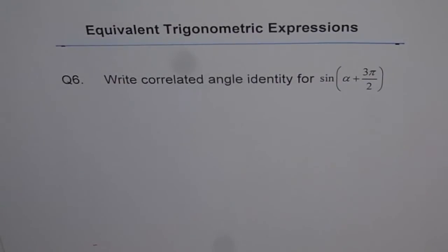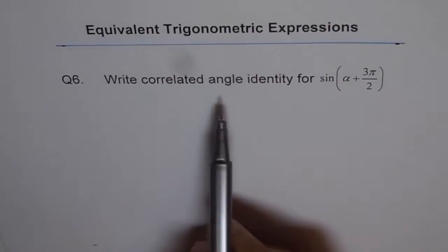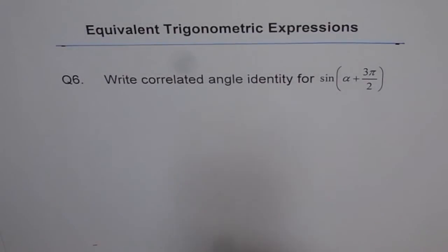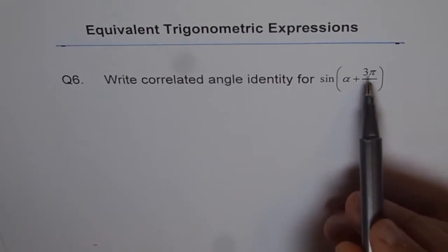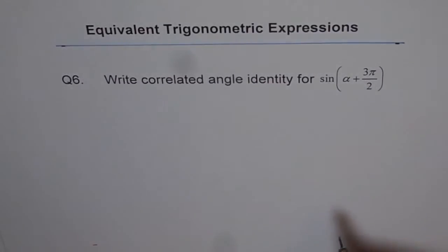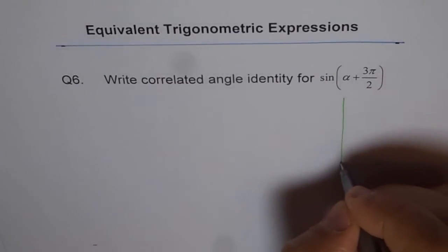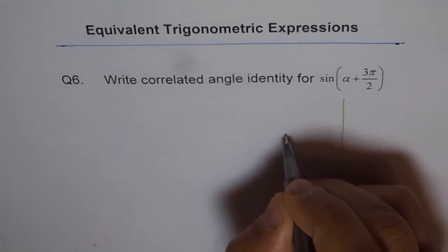Equivalent trigonometric expressions, question 6. Write the correlated angle identity for sine of alpha plus 3 pi by 2.